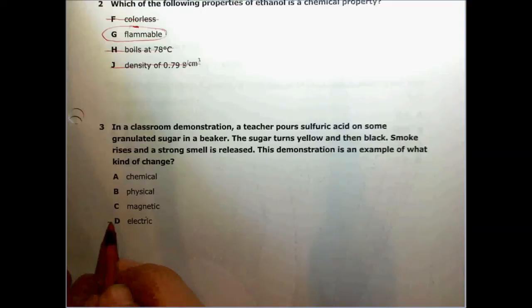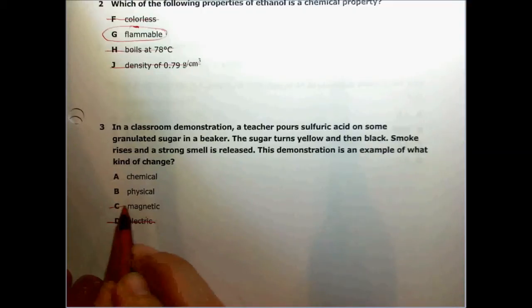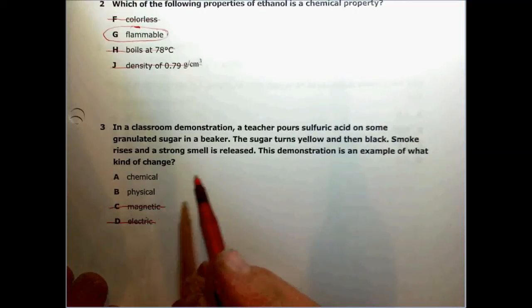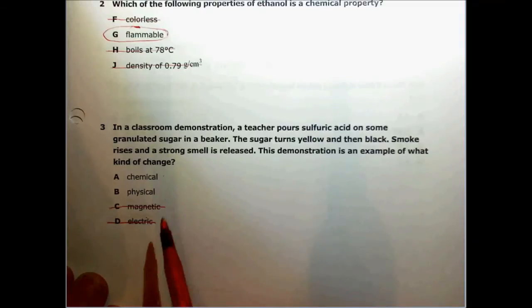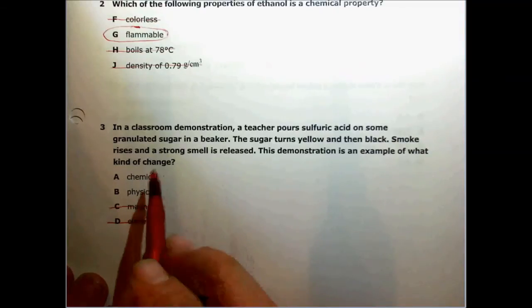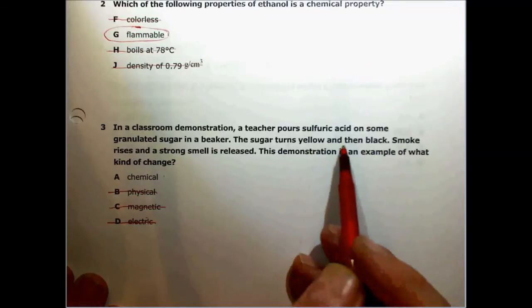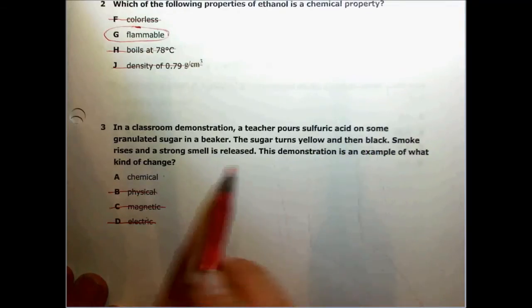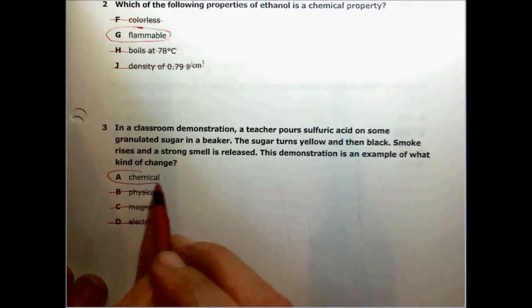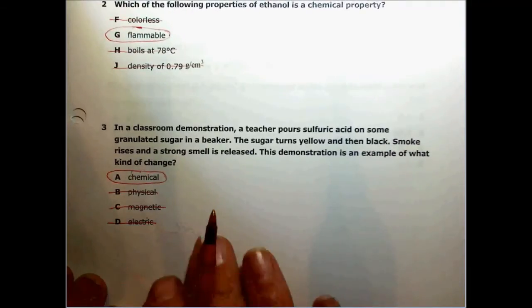Well, these two are freebies. There was no electricity or magnetism involved. This question is just to see if you know the difference between chemical and physical changes. It was clearly not a physical change because there was burning, there was a color change, there was smoke. All those things indicate that it must have been a chemical change.